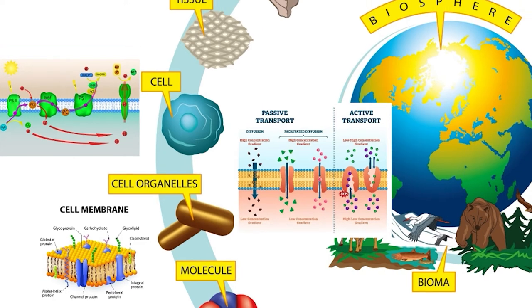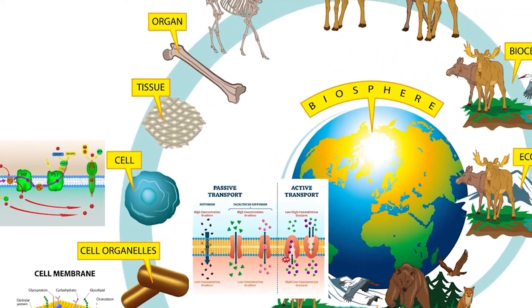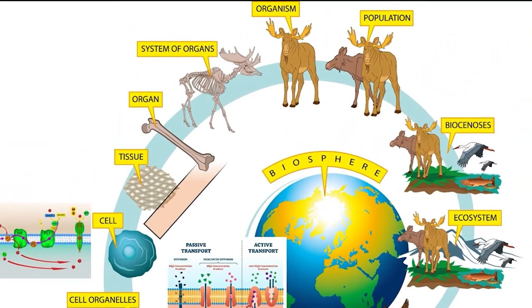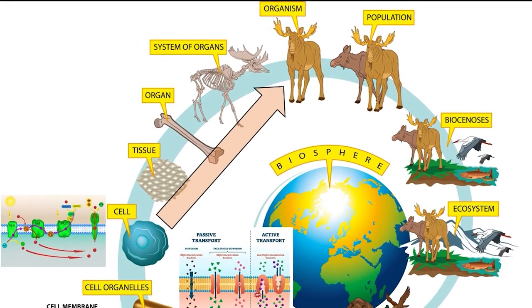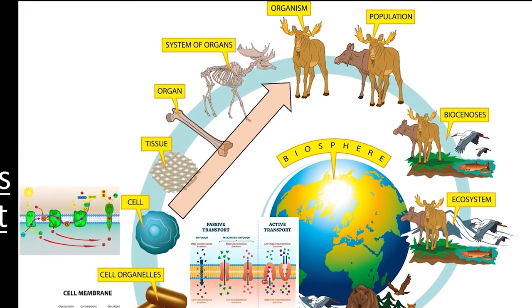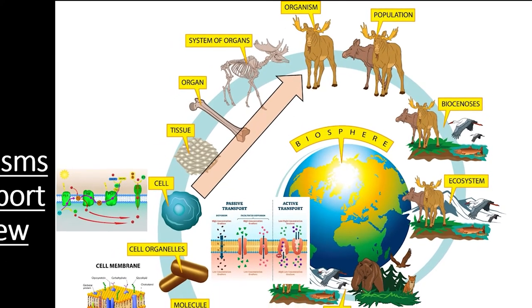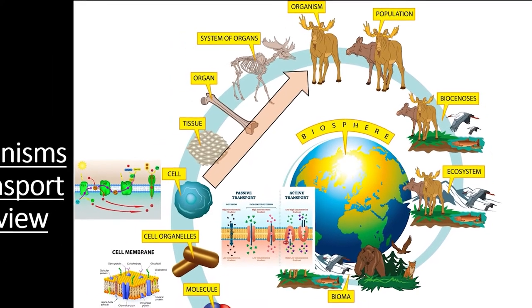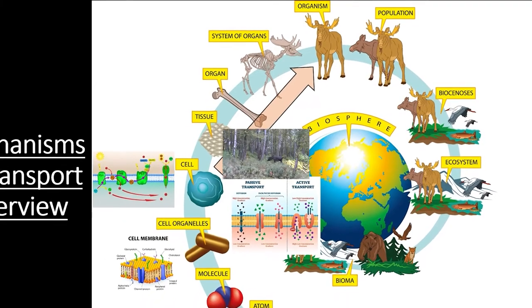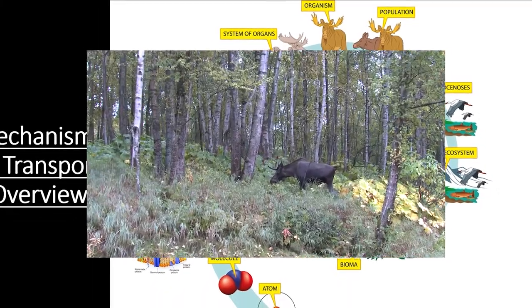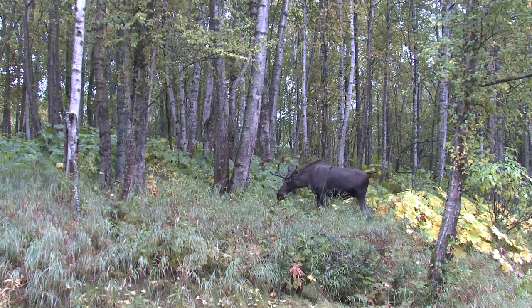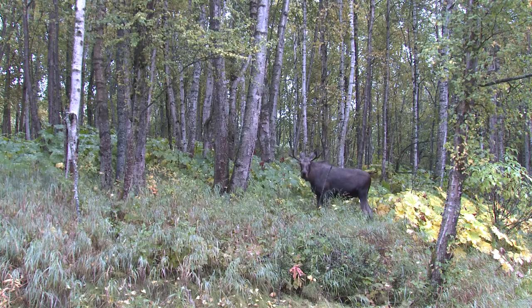In this video, we're going to start to look at how entire organisms use a wide variety of different mechanisms of transport to support individual cells, tissues, organs, organ systems, and entire organisms. These complex processes are constantly active in organisms to help them react to changing environmental conditions. Let's start with a short review of transport mechanisms and how they can work together.